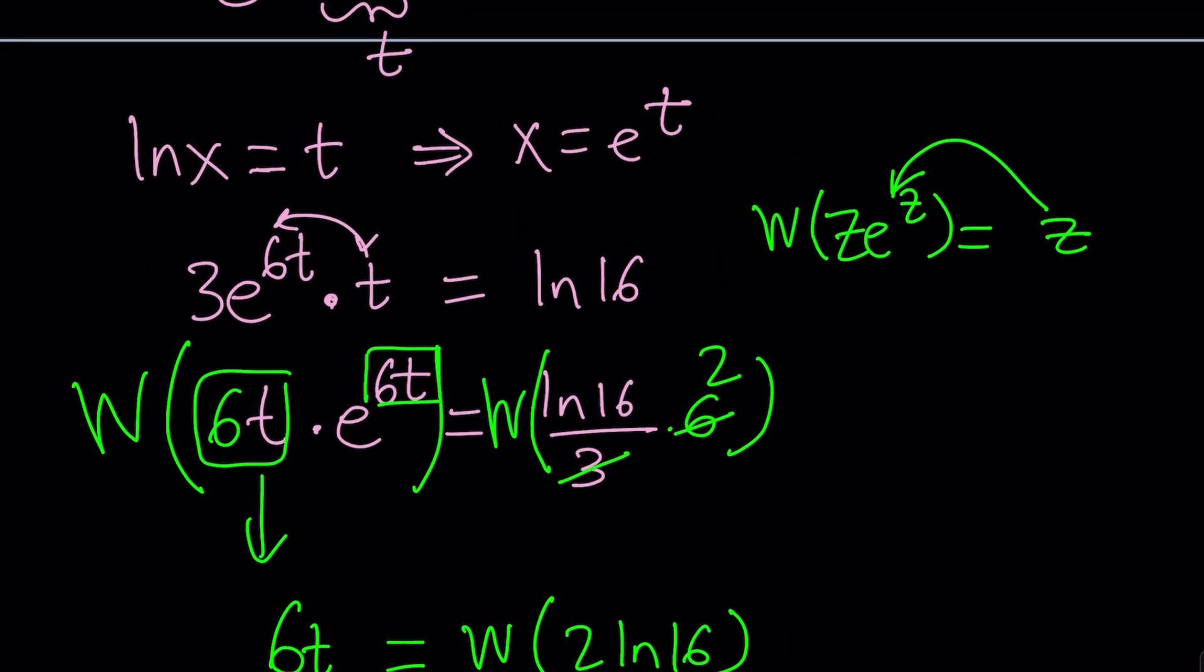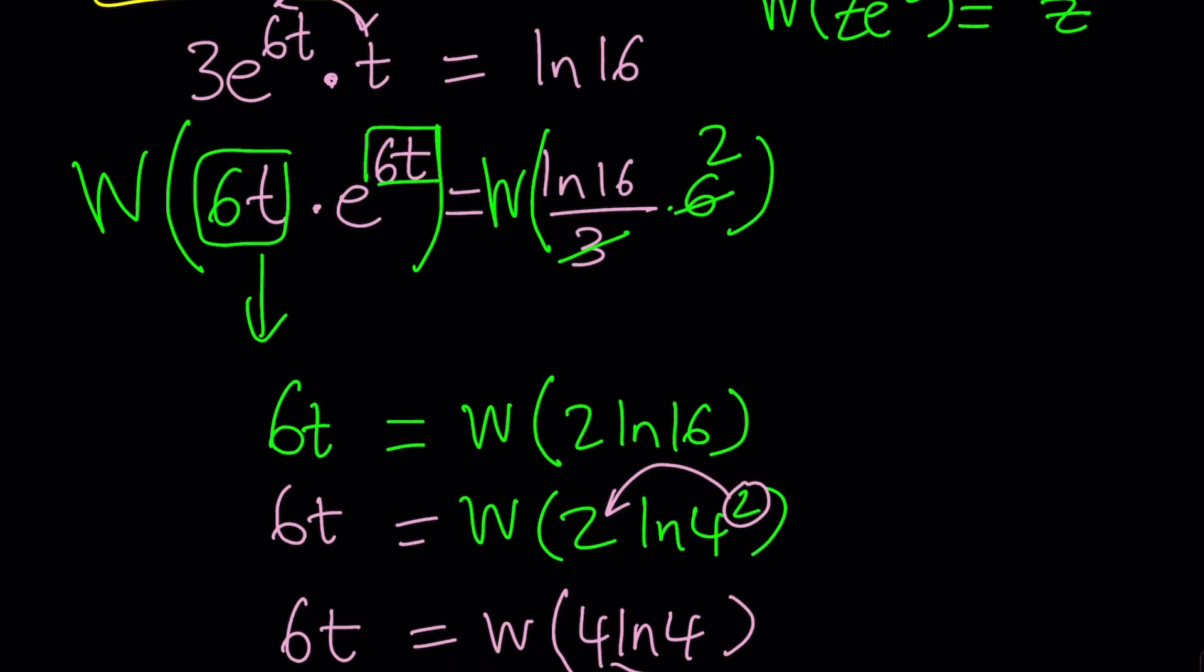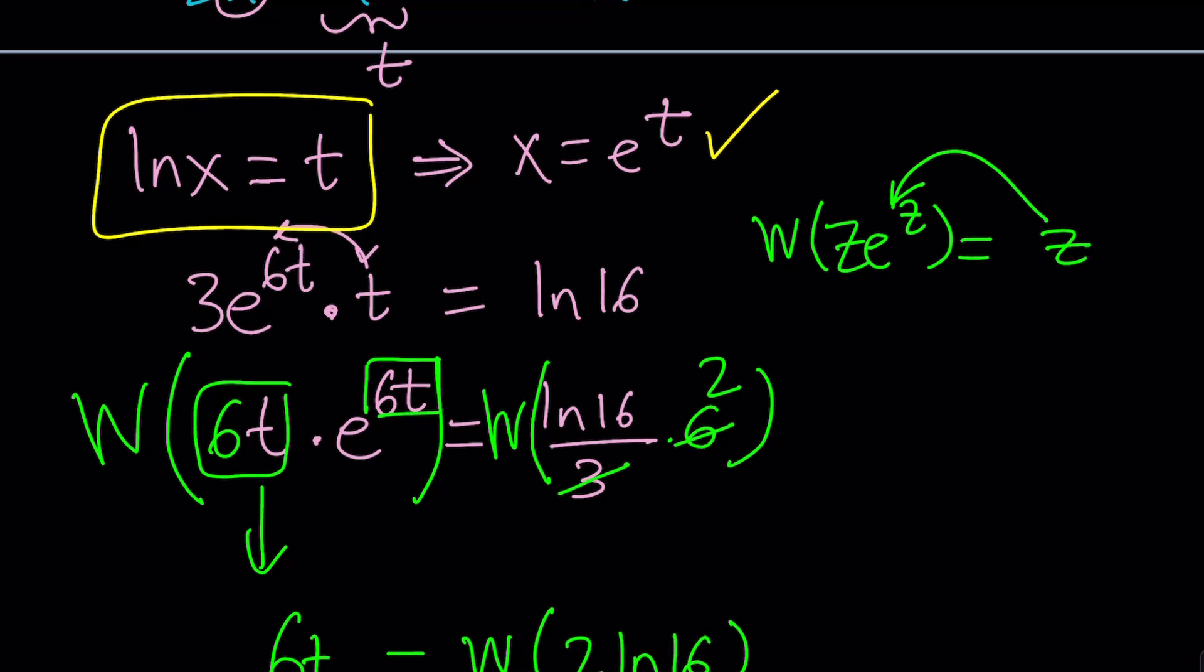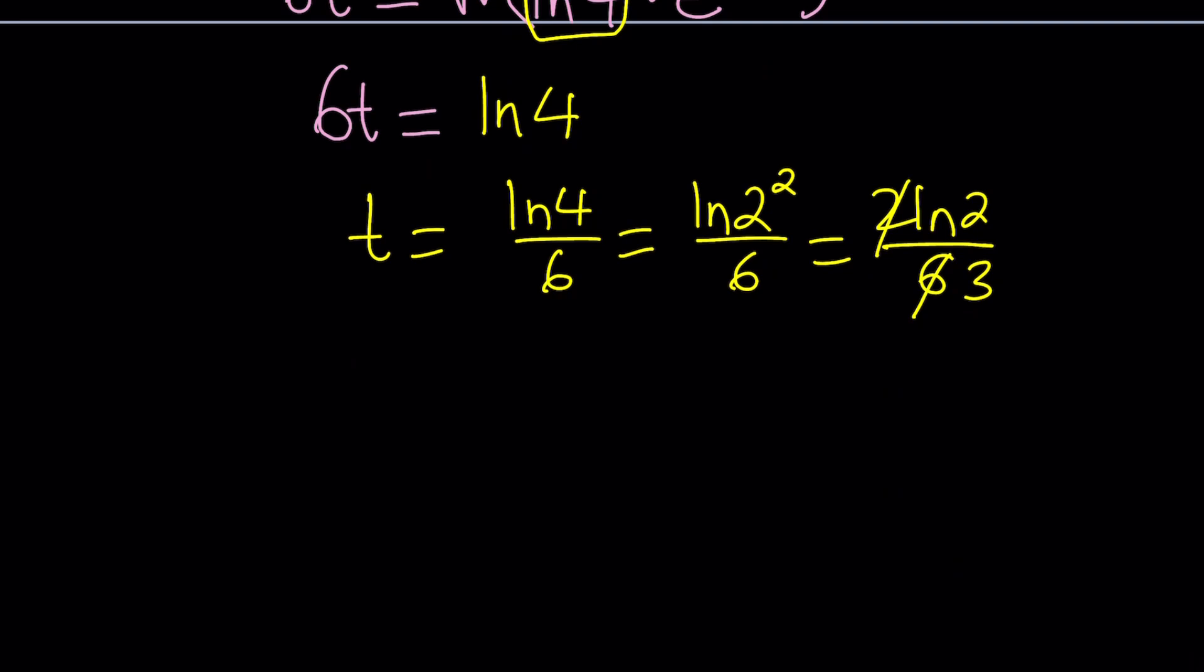But T is not the end goal, because we are solving for X. But what's the relationship? Here's the relationship. And since you know T, you can either do this, since we are trying to find X, you can directly find it. From here, X is e to the T, or set ln x equal to T. It doesn't matter. Same idea. But let's just use the second one. X is equal to e to the power T. And T is ln 2 over 3. So, this would be the answer.